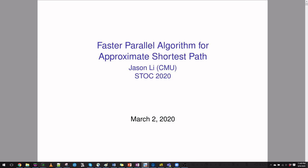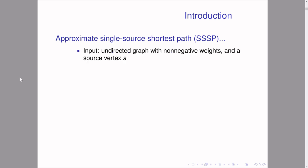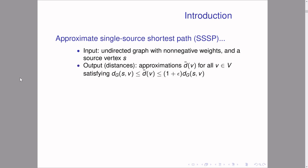I'm Jason Lee at EMU and this talk will be on faster parallel algorithm for approximate shortest path, to appear in STOC 2020. In this talk we'll be considering the approximate SSSP problem, which is: given an undirected graph with non-negative weights and a source vertex s, we want to output approximate distances from s to all the vertices in the graph.